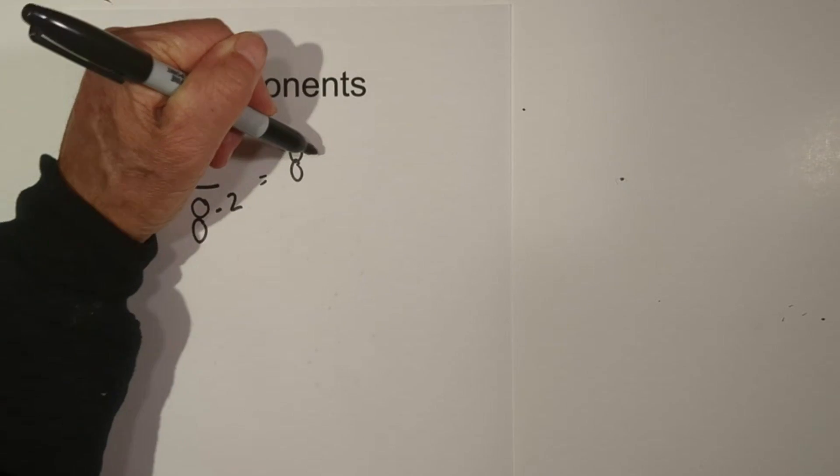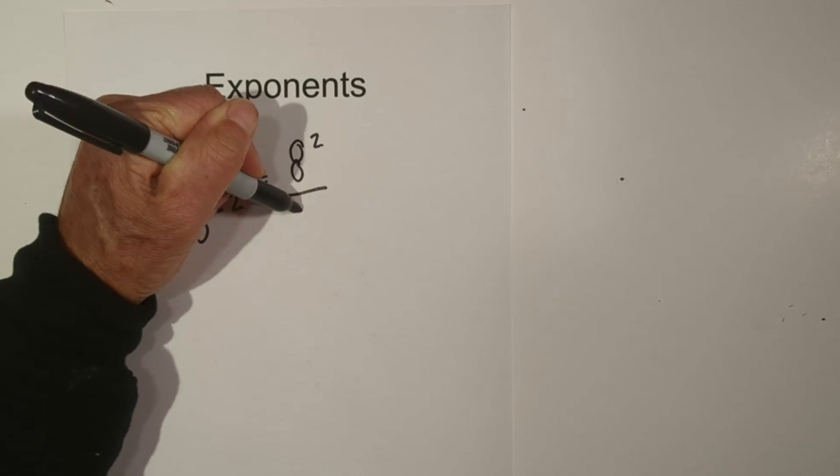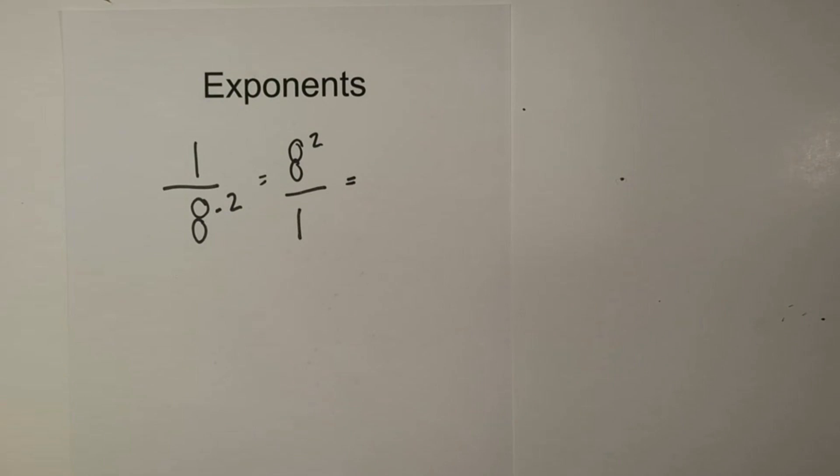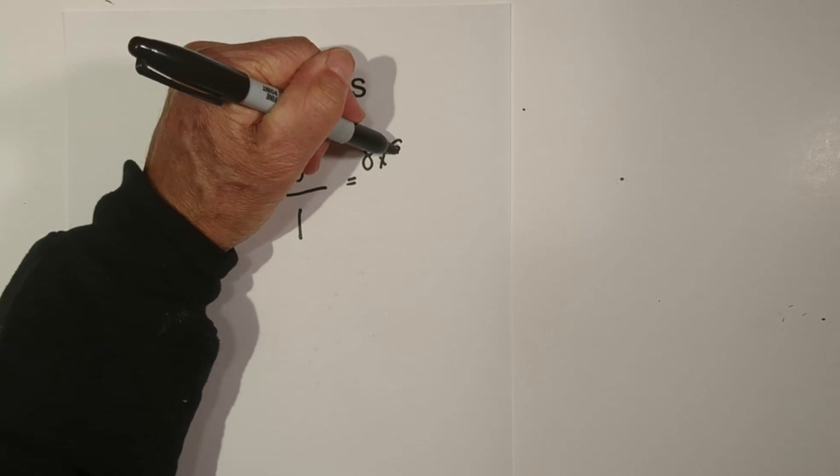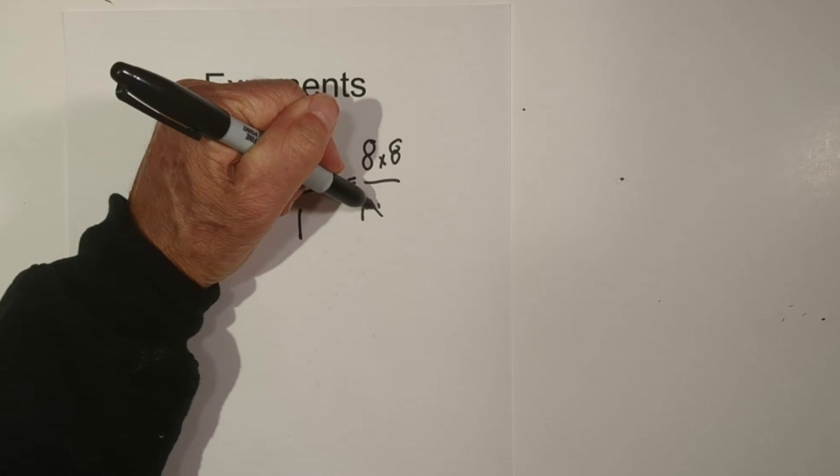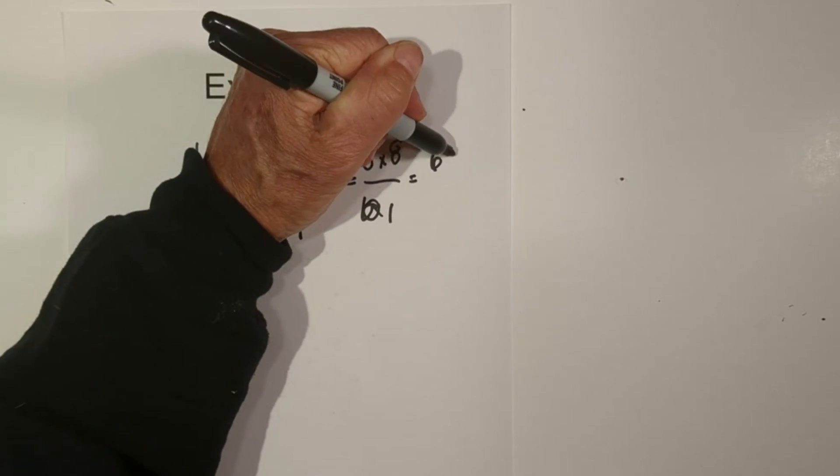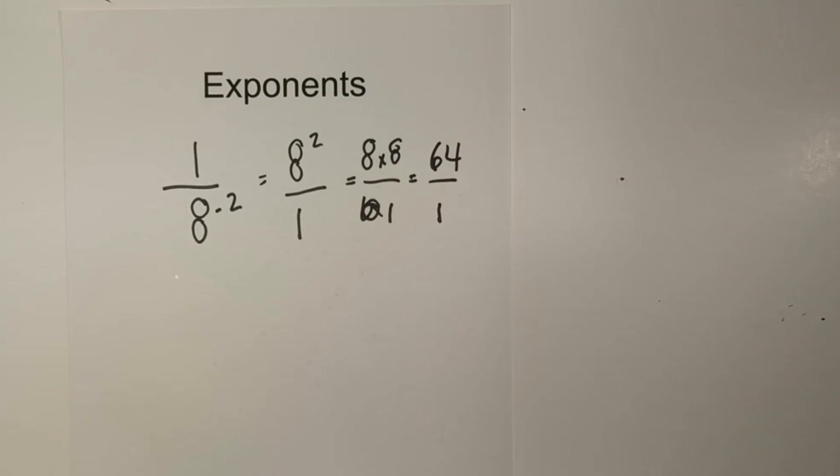So it's going to become 8 to the second power over 1, which equals 8 times 8 over 1, which equals 64 over 1.